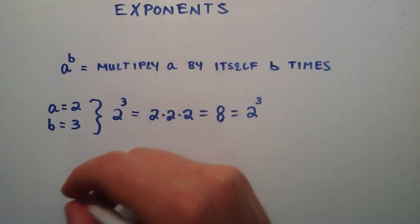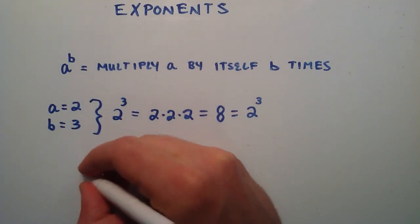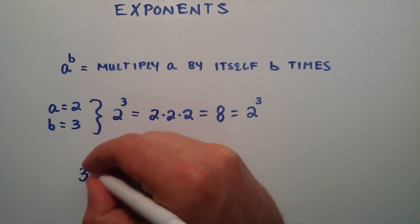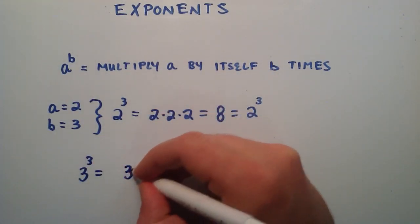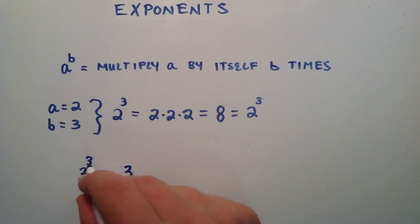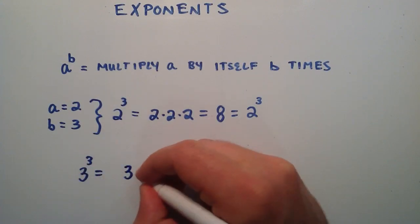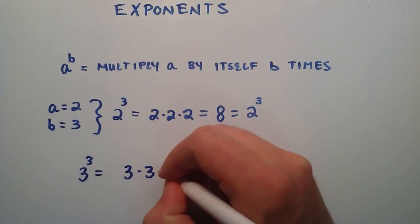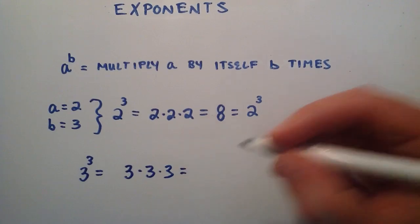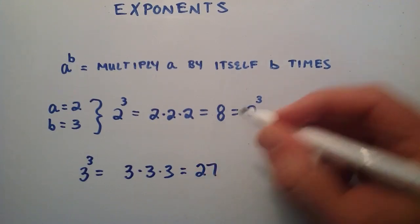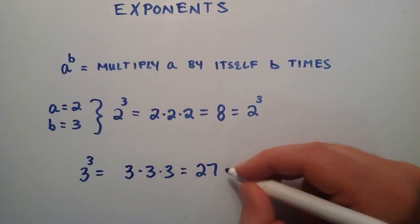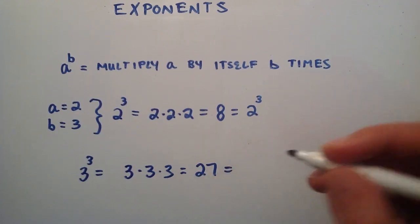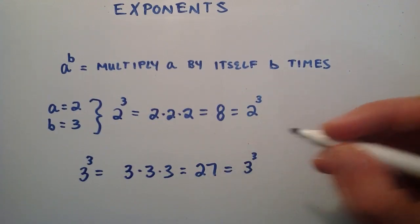So 8 is the same thing as 2 to the third power. Let's go ahead and look at another example. What if we had 3 to the third power? So this is 3 multiplied by itself 3 times, so 27 is equal to 3 to the third.